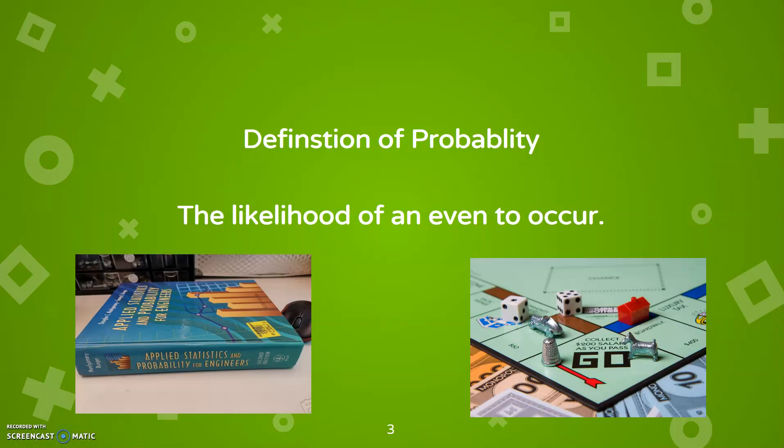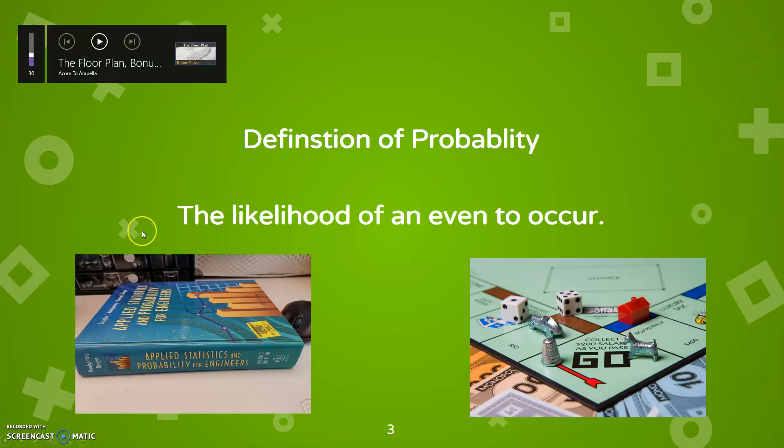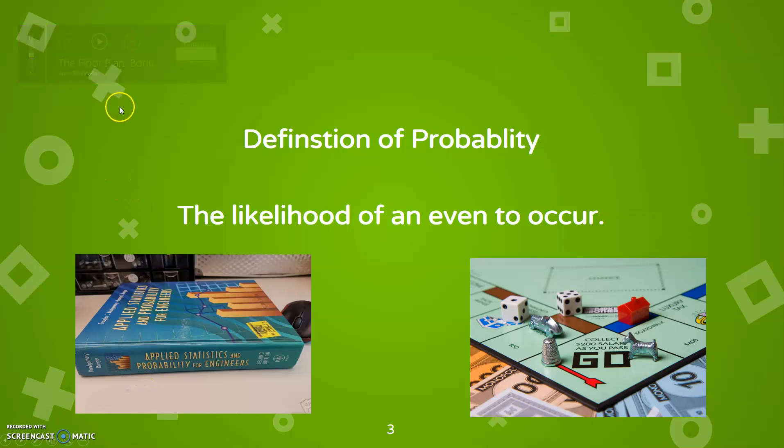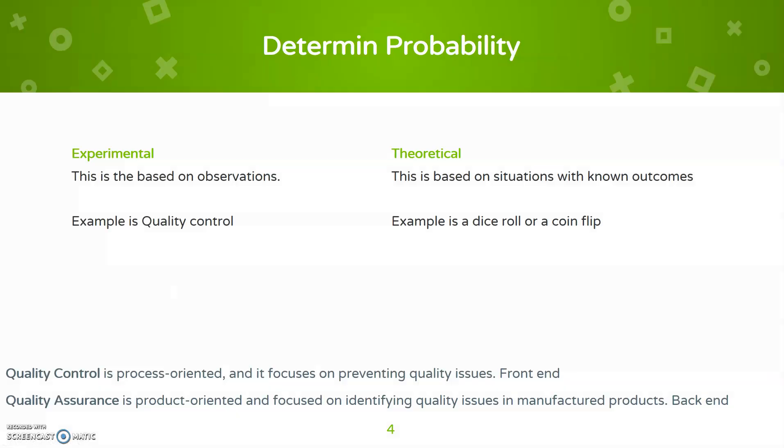In college, you will most likely have to take a class like some applied statistics and engineering class, and you're going to base it on the likelihood of events that occur. So how can we determine probability? Well, first there's the experimental, based on observations like quality control. But then there's the theoretical, which means how often something occurs based on statistical analysis, like dice rolls or coin flips.